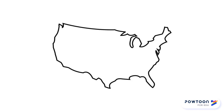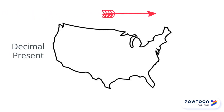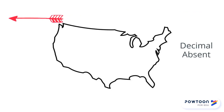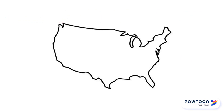The first step will be to determine if there's a decimal present in the number. If there's a decimal present, we'll start counting the sig figs from the left, the Pacific side, toward the right. If there's no decimal present, we will start counting from the right, the Atlantic side, toward the left. Let's look at some numbers in practice.